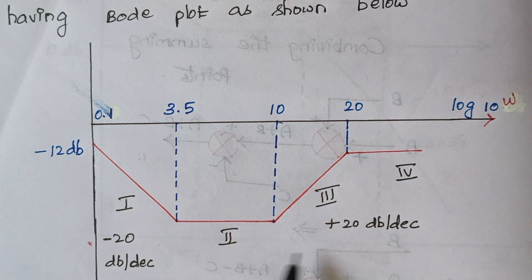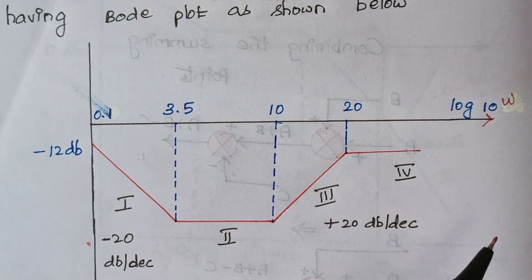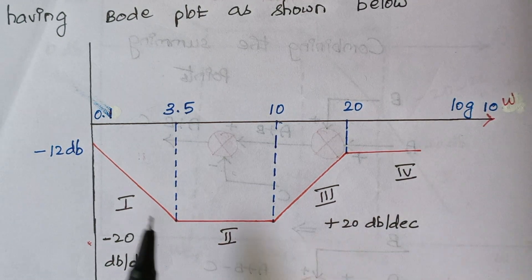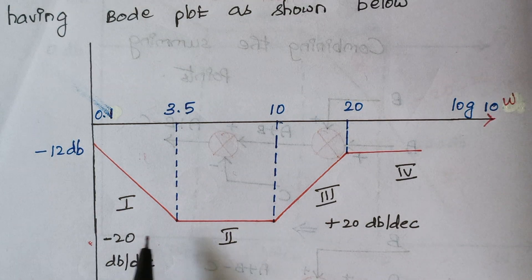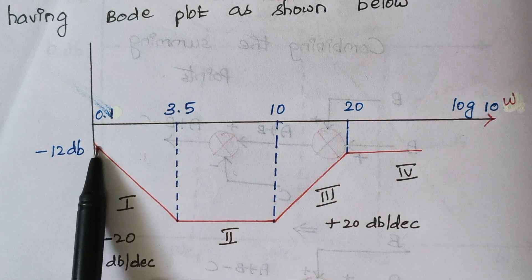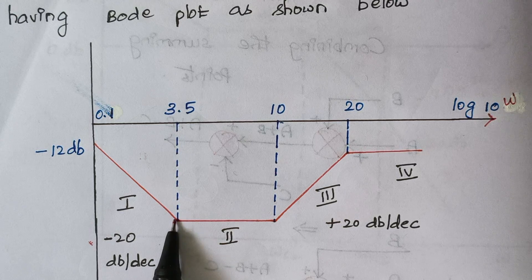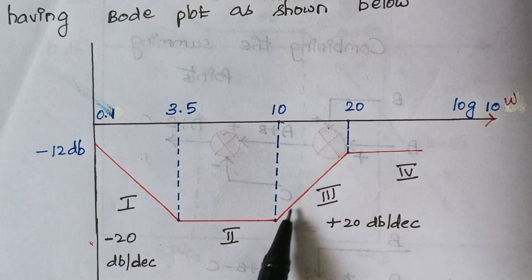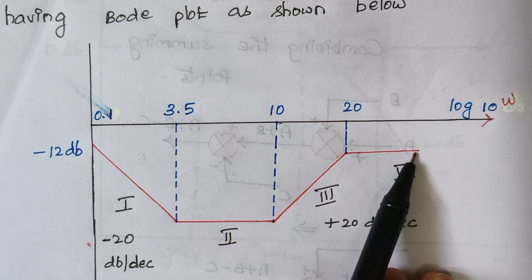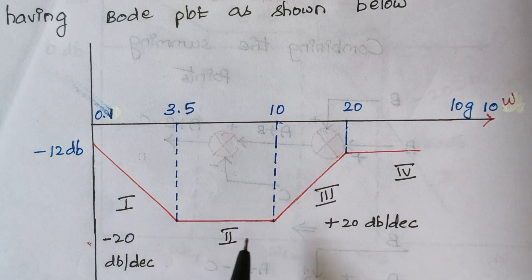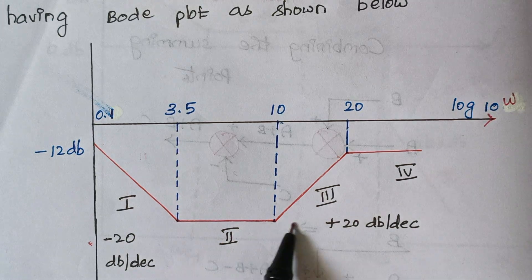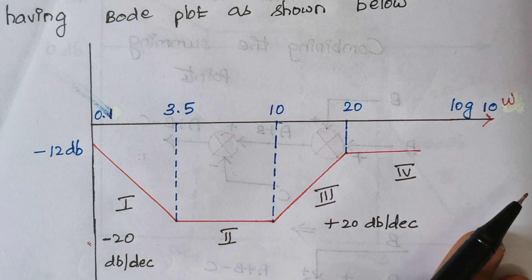This is our given Bode plot, and from it we need to find the transfer function. When you look at the Bode plot, you see we have four parts. This is our first part, this is our second part, this is our third part, and this is our fourth part. I had marked these as individual parts — in the problem they had simply given the diagram.